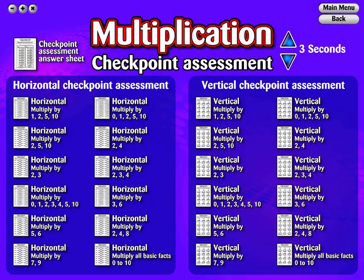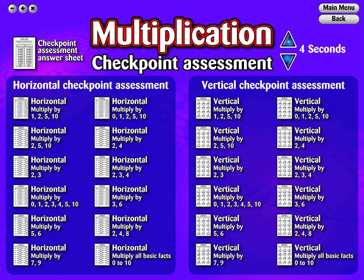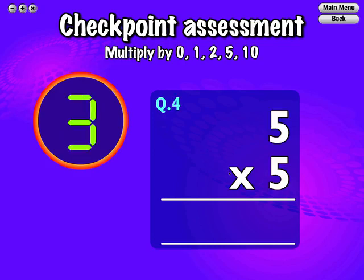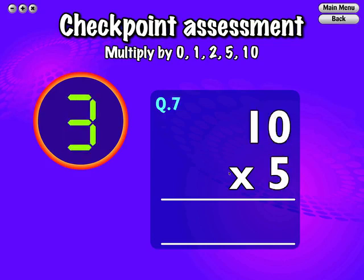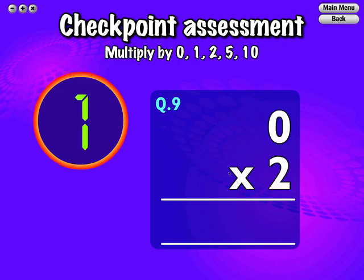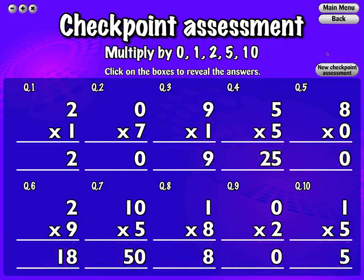Checkpoint assessments are given for each strategy. A checkpoint assessment answer sheet can be printed out for students to write their answers on. An up and down arrow will allow you to change how many seconds a question will appear on the screen, from 2 to 15 seconds. Once inside the assessment checkpoint, press start. The timer will count down and a new randomly generated question will be displayed until all 10 questions have appeared. At the end of the assessment, all 10 questions will be displayed with their answers covered, allowing you to reveal the answers one by one or reveal them all at once by clicking on the view answers button. To do another assessment checkpoint in the same strategy, click on the new checkpoint assessment button.